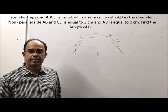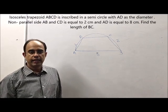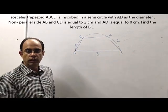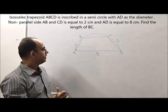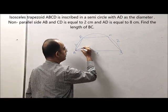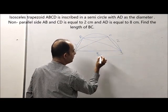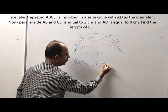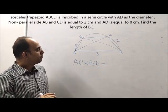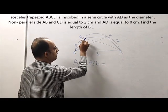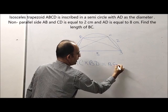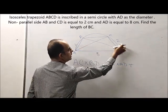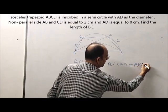There is a concept, a theorem, which says in any cyclic quadrilateral, the product of the diagonals is equal to sum of product of opposite sides. It means you join the two diagonals AC and BD. Product of the two diagonals AC into BD is equal to sum of product of opposite sides.